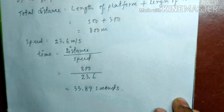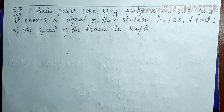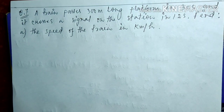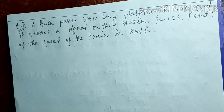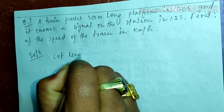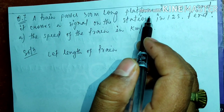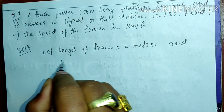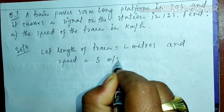Here we finish solving question number six b. Now we will solve question number seven a. The train passes a 300-meter-long platform in 30 seconds and crosses a signal on the station in 12 seconds. Find the speed of the train in kilometers per hour. Let the length of the train be L meters, and the speed be S meters per second.